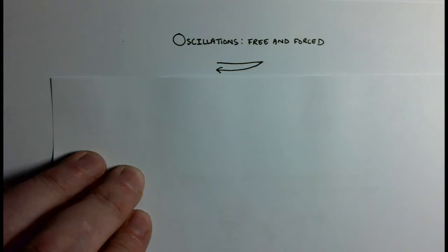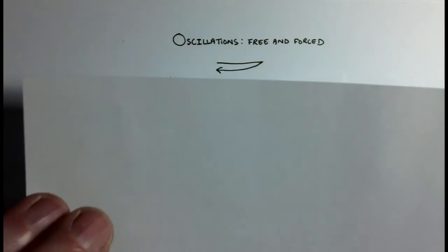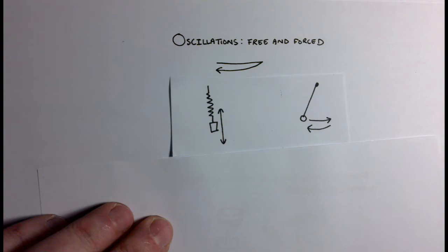But today we need to make the distinction between free oscillations and forced oscillations. So here I've got some examples of free oscillations, and a free oscillation is basically if you set something in motion that oscillates and just leave it to its own devices.